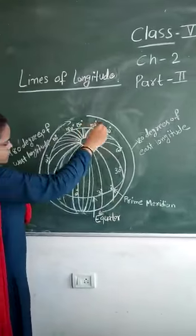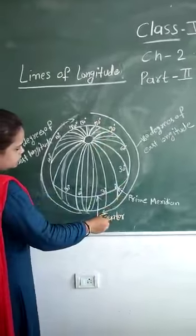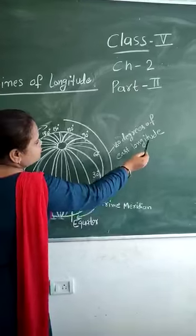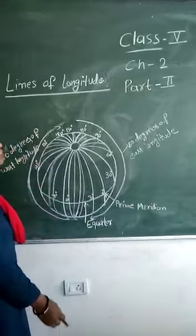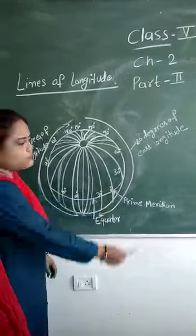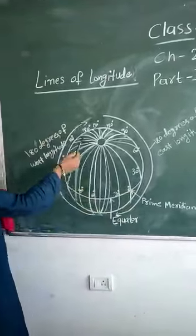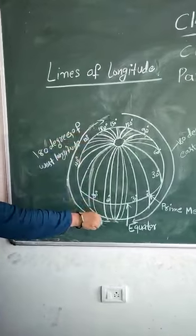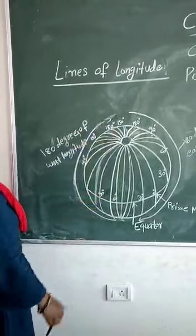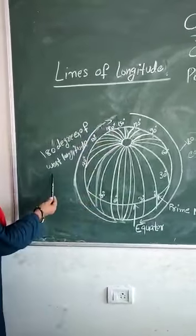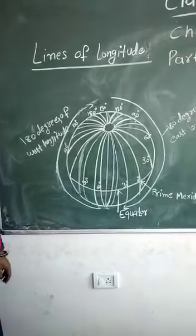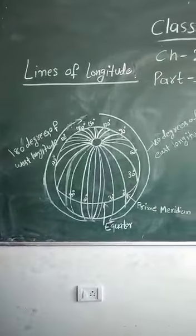The line 180 degrees east of the prime meridian is called the eastern hemisphere, and the line 180 degrees west is called the western hemisphere.